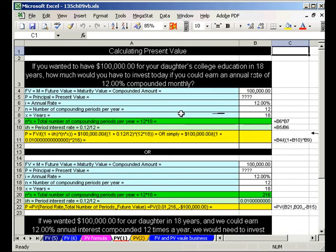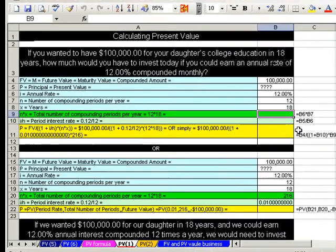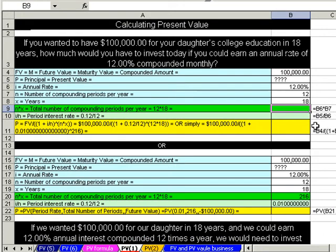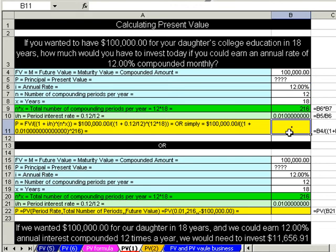Monthly is compounding periods. How many compounding periods per year? 12. Years, 18. Let's go ahead and do our calculation. Total number of compounding periods is going to be equals our compounding periods per year times our years. 216. Our period interest rate is equals 12% divided by 12 months, so each month we're going to get 0.01 or 1%.